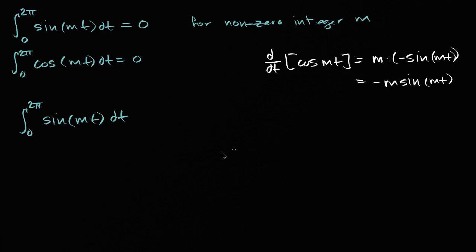And so I almost have negative m sine of mt, I just don't have a negative m here. So what if I put a negative m there? But I can't just do that, that would change the value of the expression. But I could also multiply by negative one over m. Now these two, if we take the product, they're gonna cancel out and we're gonna get our original expression. But this is useful because now we can say this is equal to negative one over m. And now the anti-derivative of this business right over here we know is cosine mt. So it's gonna be cosine mt evaluated at two pi and zero.